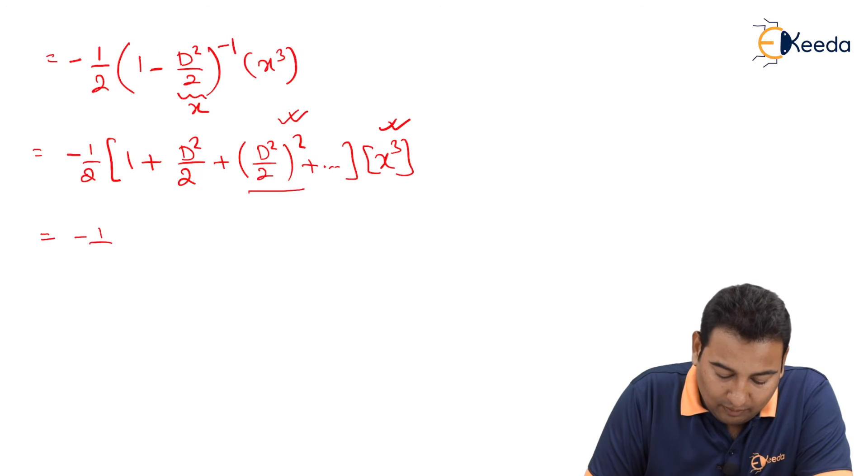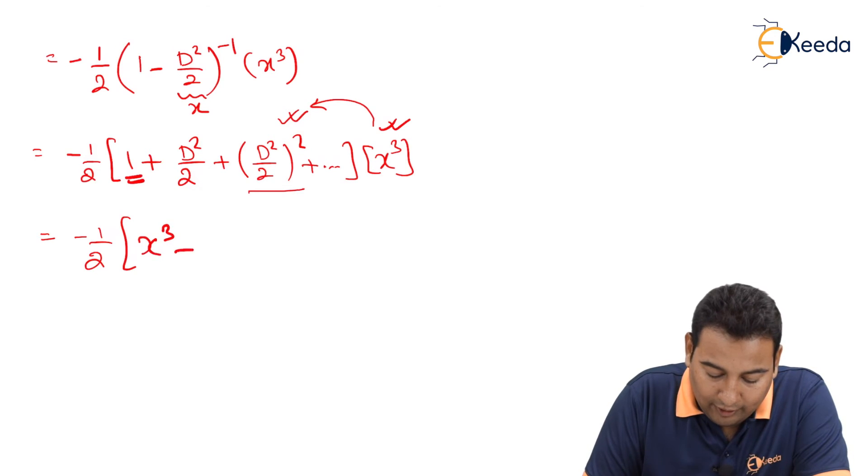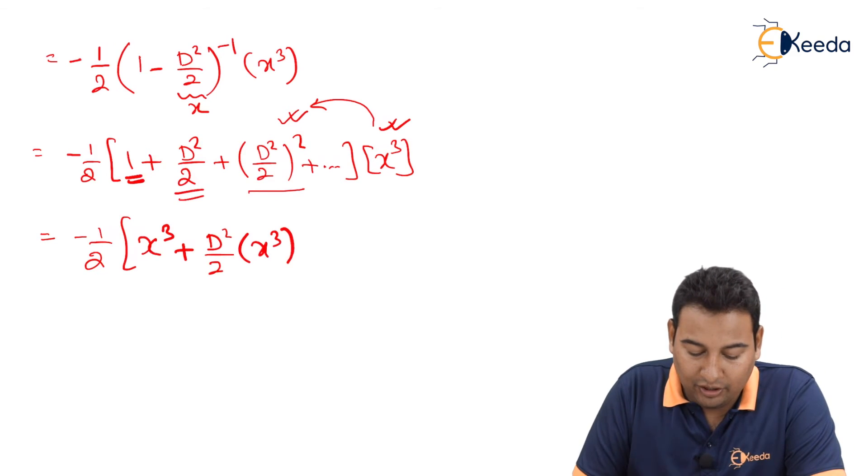Next step is open the brackets. x cube will be multiplied to all the terms. If it is multiplied to 1, it is x cube only. D²/2 into x cube with this multiplication.